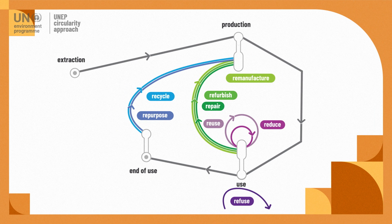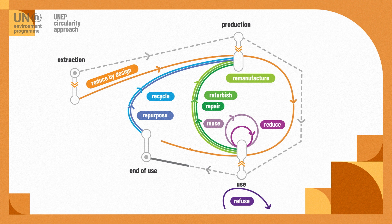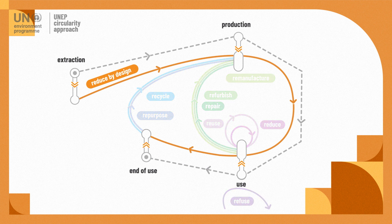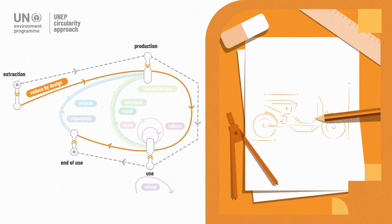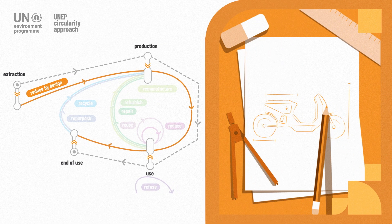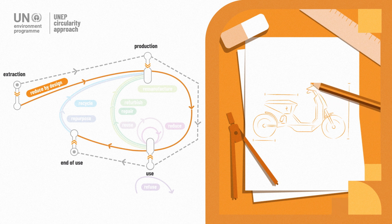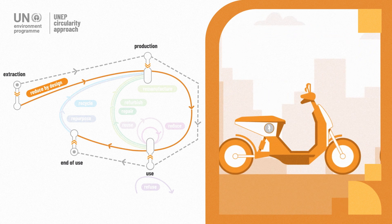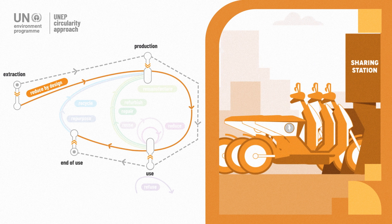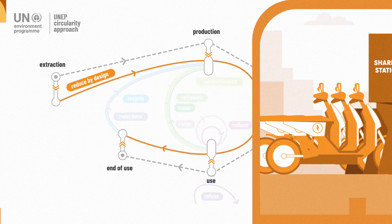These eight circular processes can be impactful only if the overall principle of reduce by design is applied. Design influences the full lifecycle of materials, products, and services by requiring less raw material during production and use, and anticipating their lifetime extension and their sound disposal at the end of use.